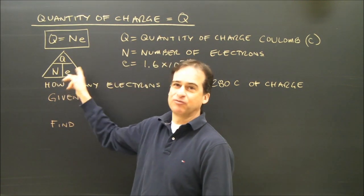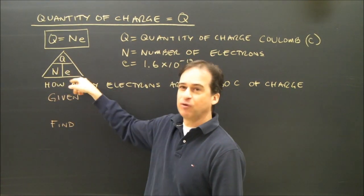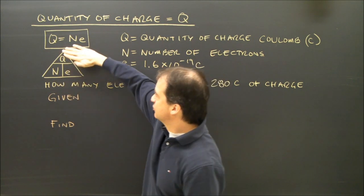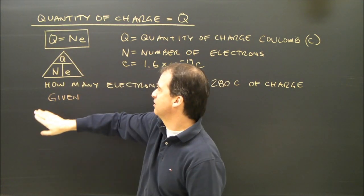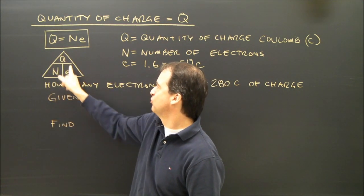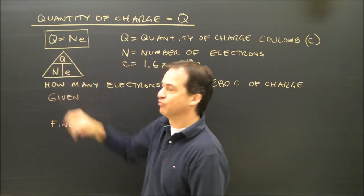Some people like to write the formula like this, because if you write it like this, then all variations are there. For instance, Q equals N times E. N equals Q divided by E. E equals Q over N.